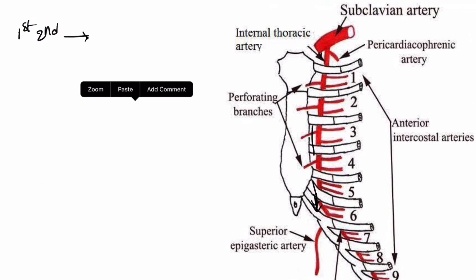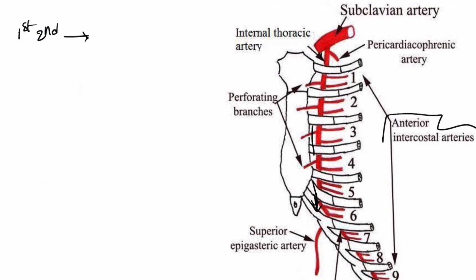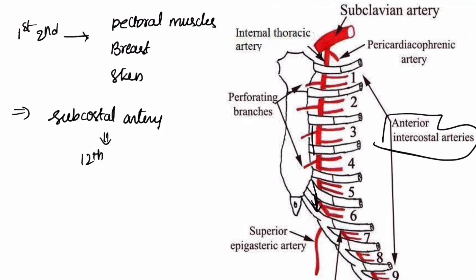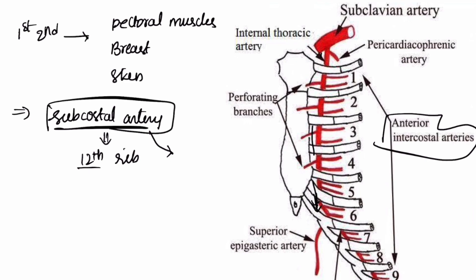The anterior intercostal arteries supply the pectoral muscles, breast, and skin. We also have the subcostal artery below the twelfth rib, which is a direct branch of the thoracic aorta.